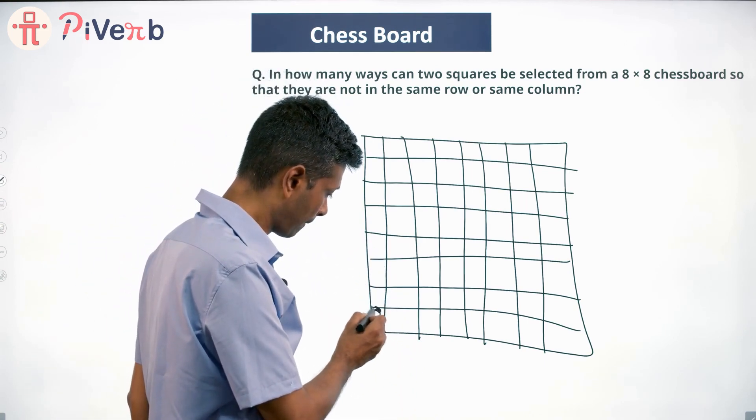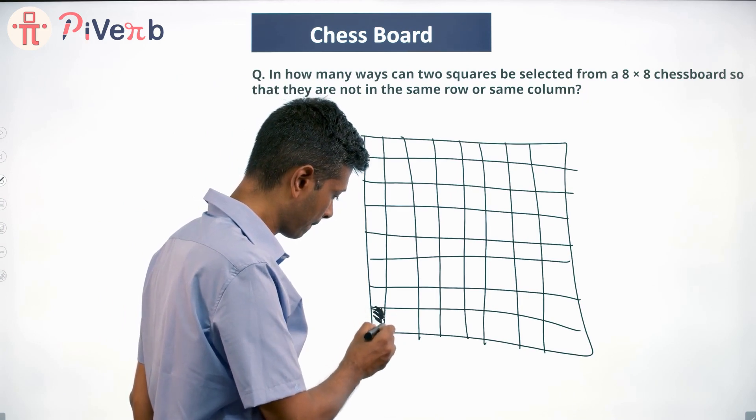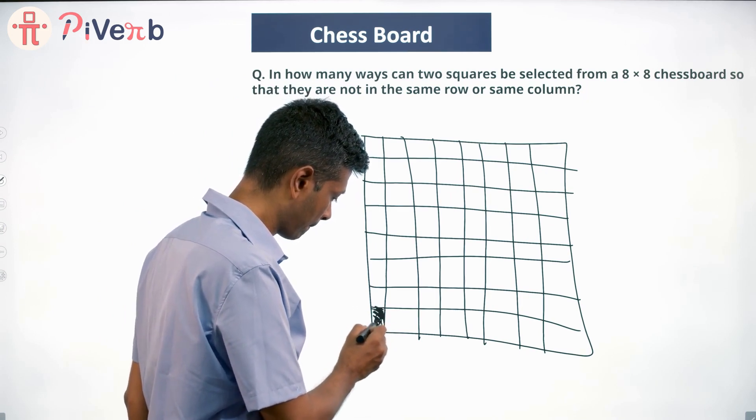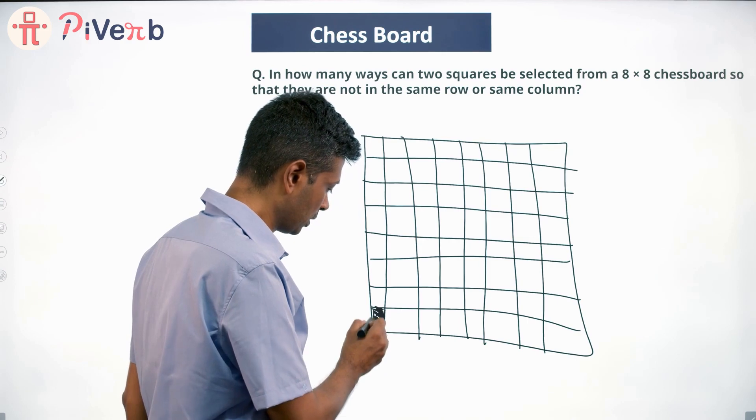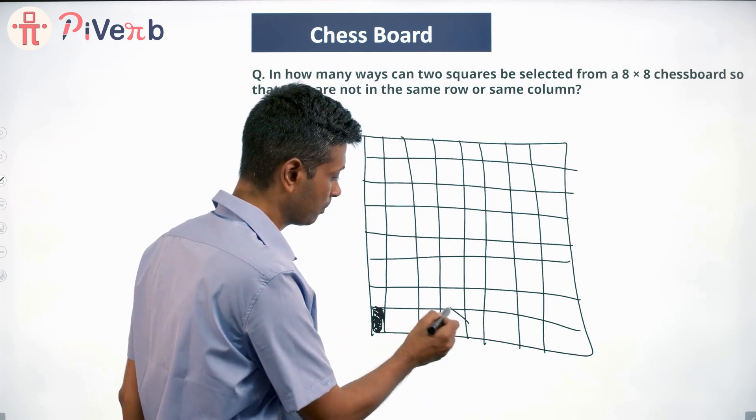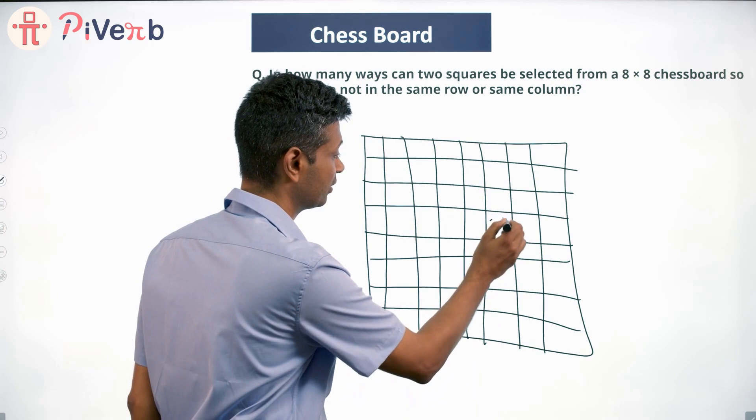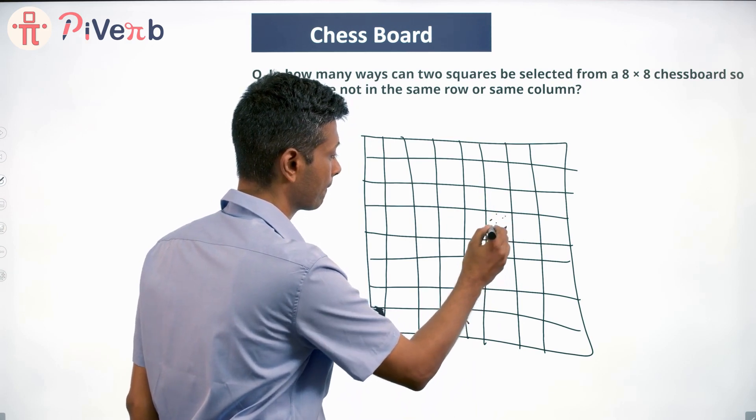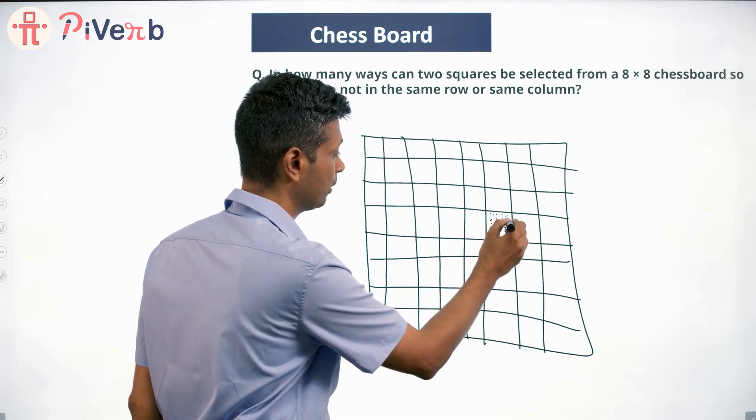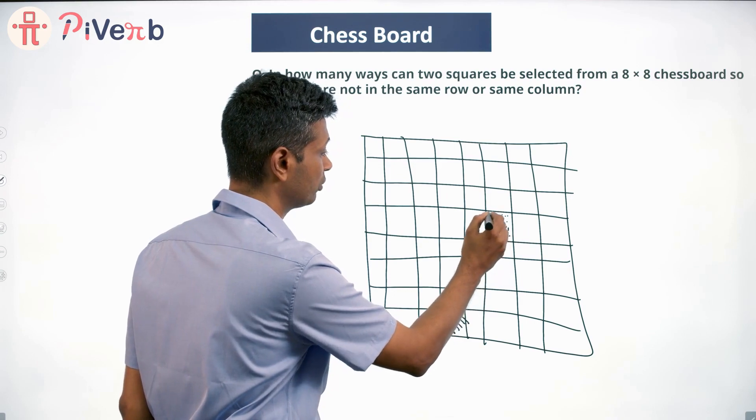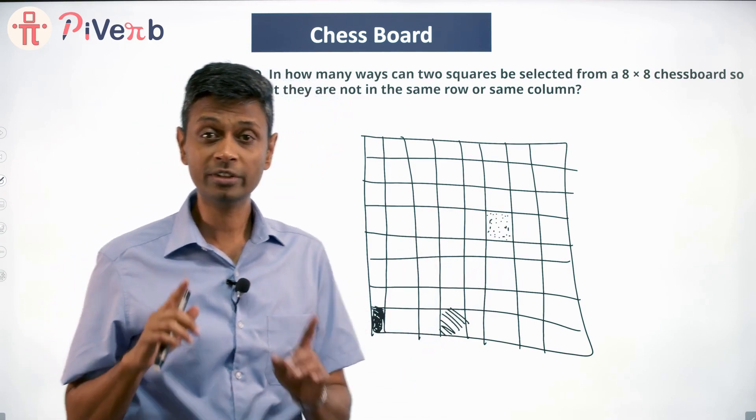It can be a corner square, it can be a square on the side, it can be a square right at the center. Three types of squares are there. The first square could be any of these. I'm going to consider each of these scenarios.